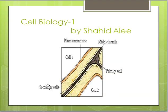Here we have two adjacent cells — cell number one and cell number two. The primary wall belongs to each cell, and the middle lamella lies between them. Further inside is the secondary wall. This is the general arrangement of cell wall layers.